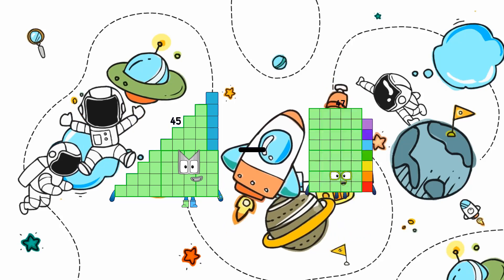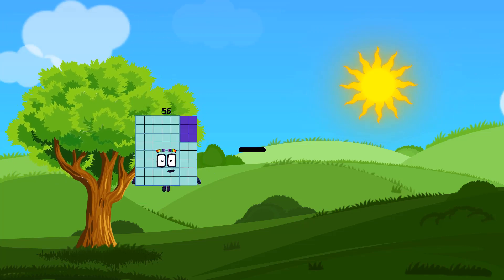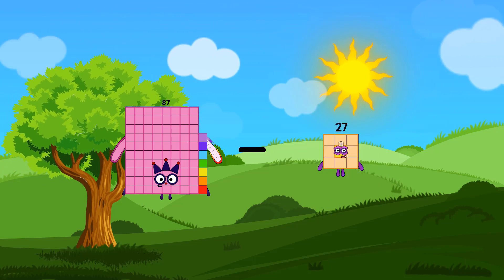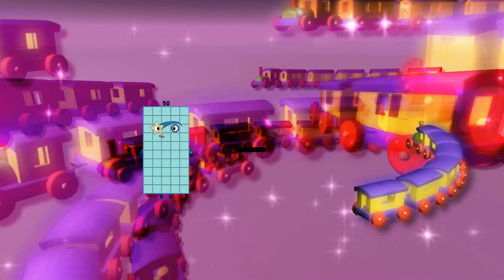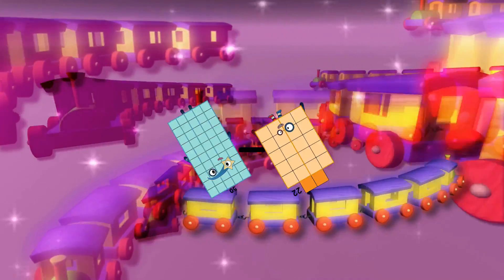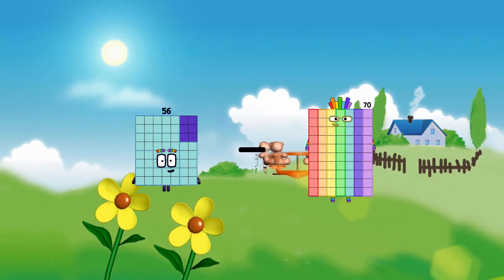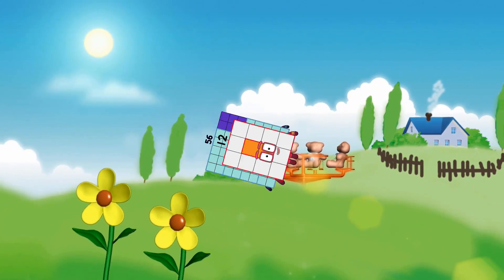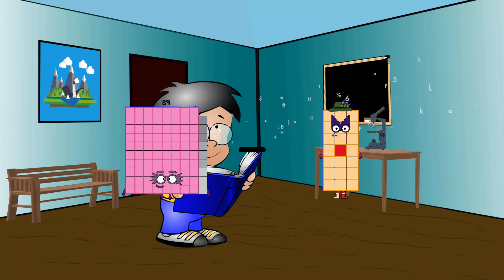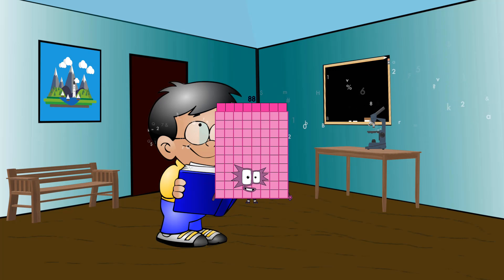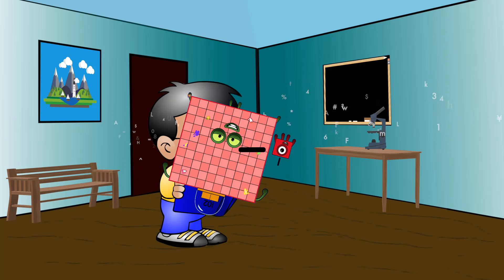45 minus 19 equals 26. 87 minus 20 equals 67. 50 minus 22 equals 28. 56 minus 12 equals 44. 89 minus 1 equals 88. 102 minus 1 equals 101. 62 minus 4 equals 58.